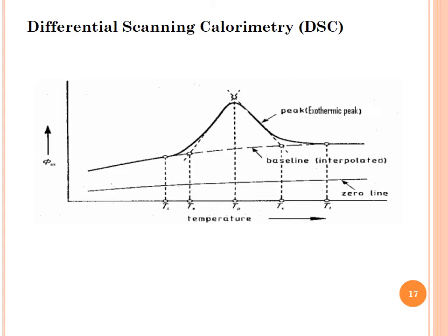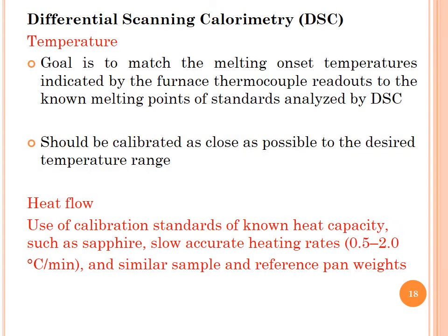The amplified DSC signal is automatically varied with temperature to maintain constant calorimetric sensitivity. In the baseline correction graph, there is a zero line, a baseline interpolated, and an exothermic peak. The maxima represents exothermic and the minima represents endothermic events in DSC curves. For temperature calibration, the goal is to match the melting onset temperatures indicated by the furnace thermocouple readout to the known melting points of standards analyzed by DSC, calibrated as close as possible to the desired temperature range.